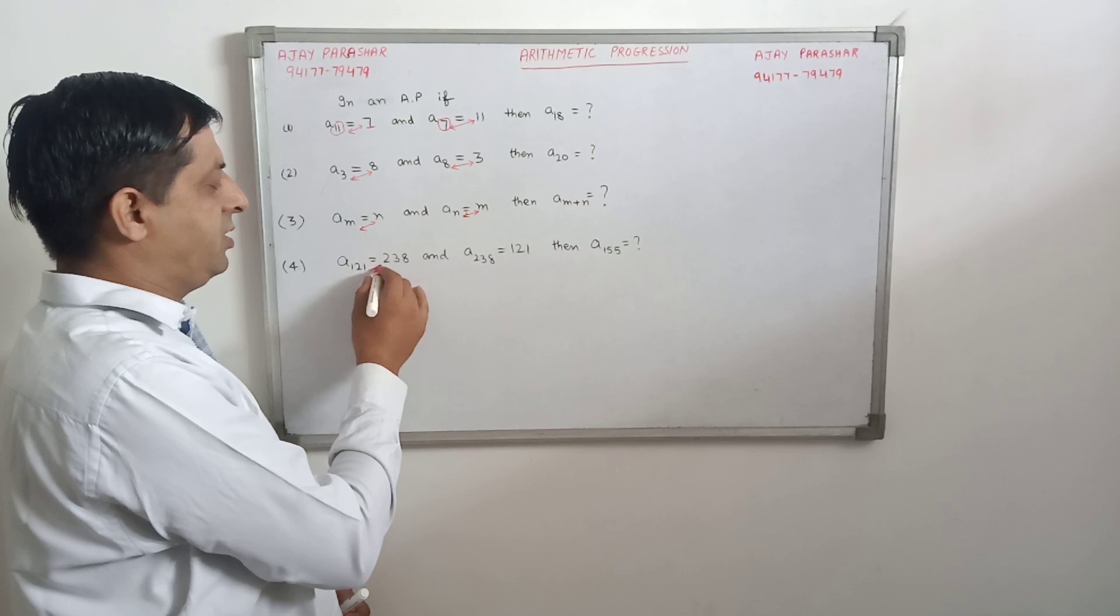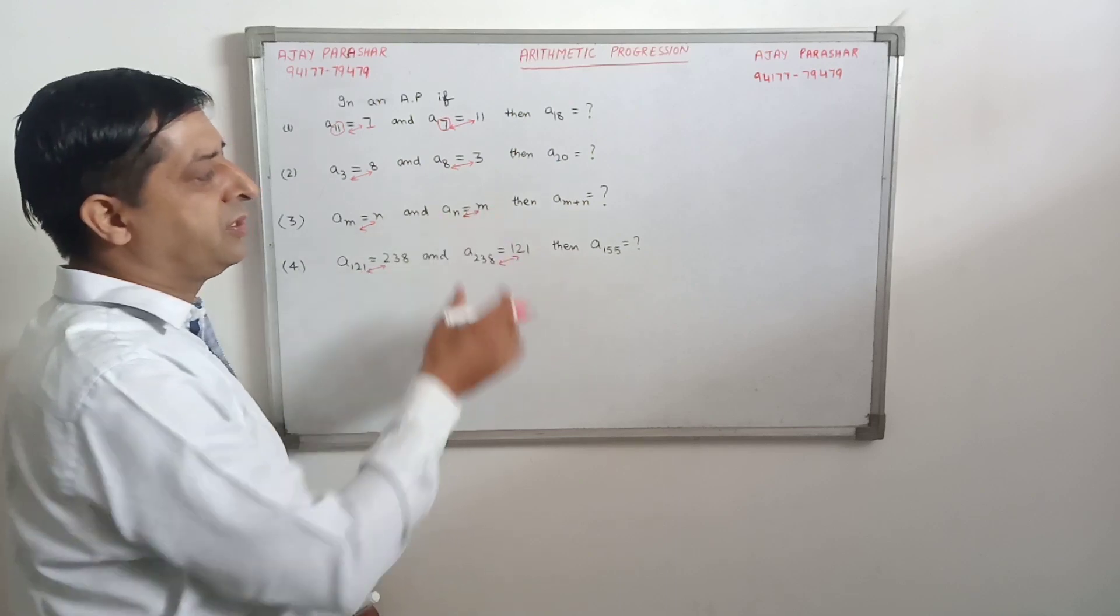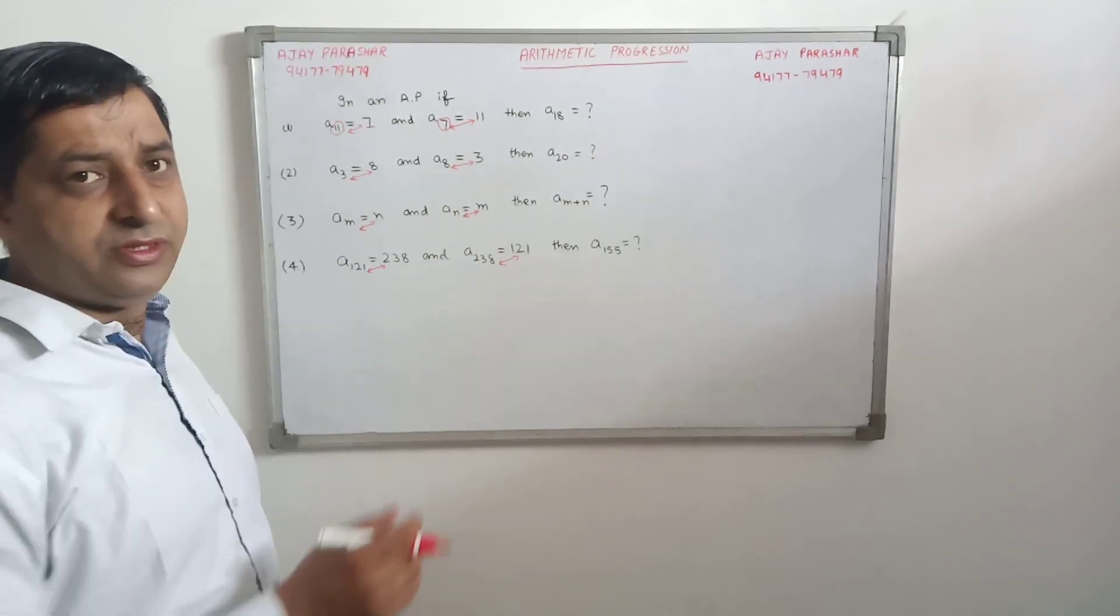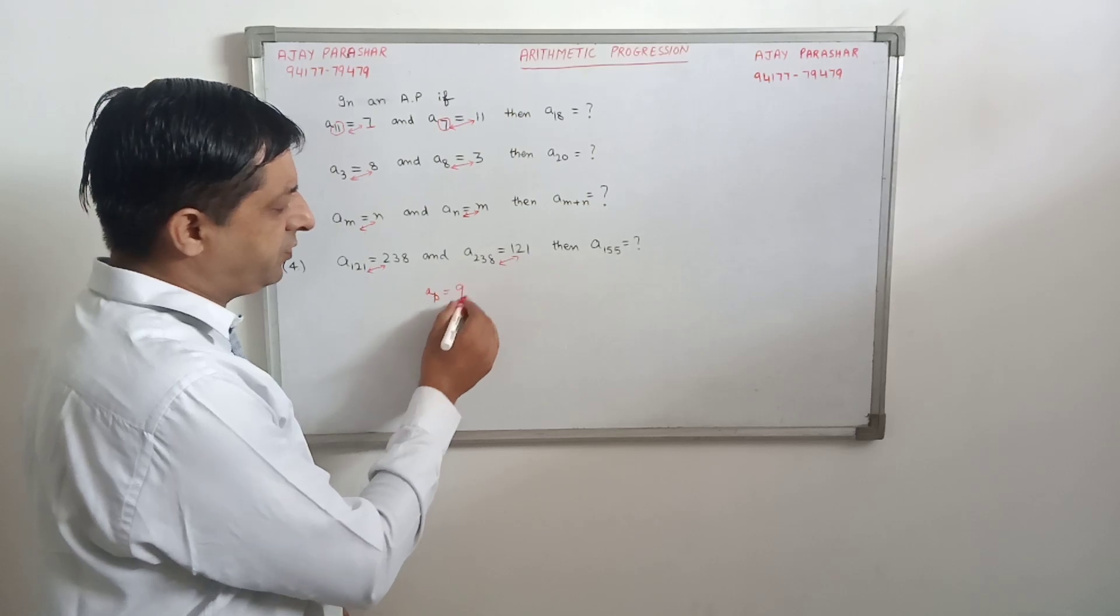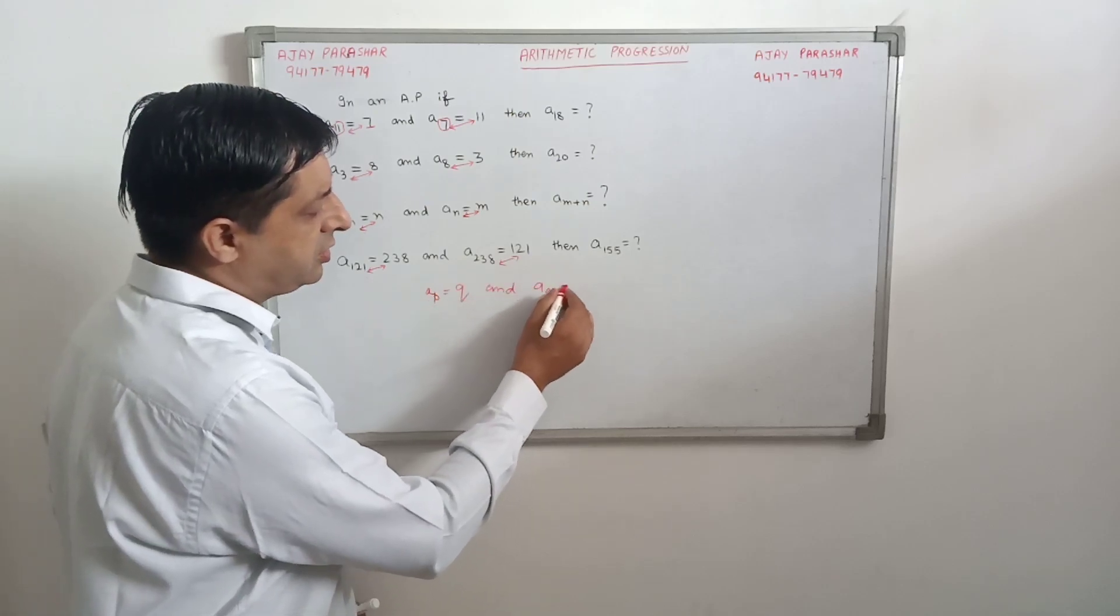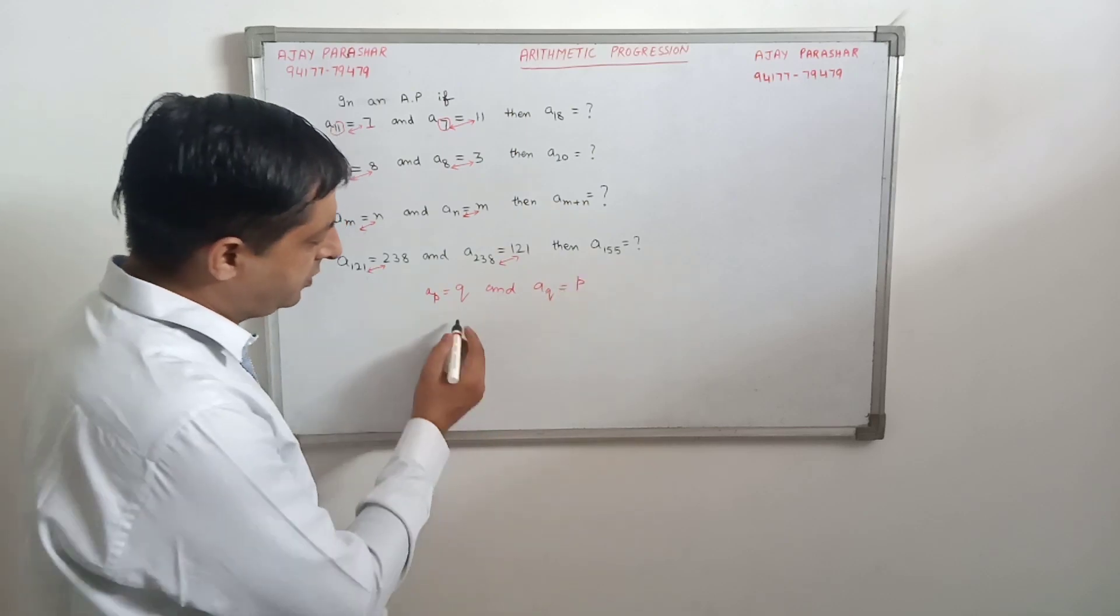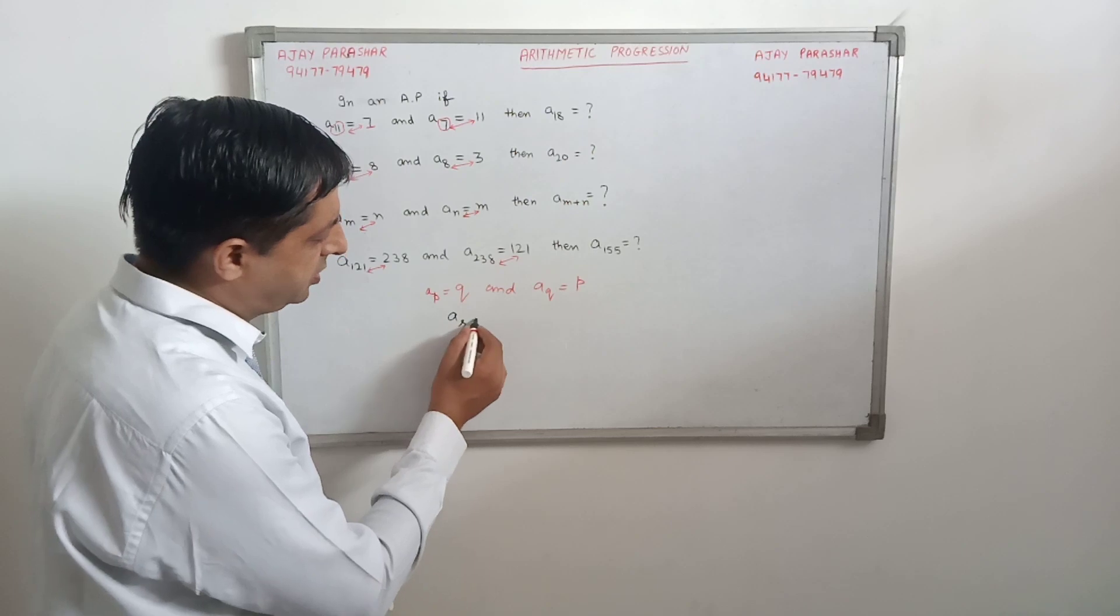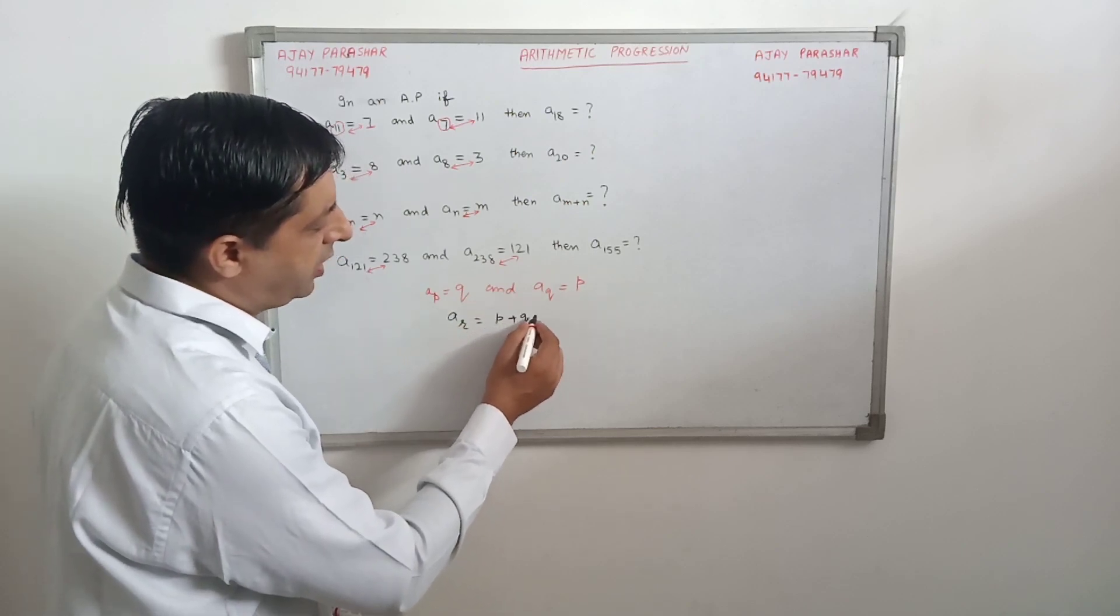And same way, 121, 238, 238, 121. In such questions, the trick is that if pth term is q and qth term is p, then rth term is always p plus q minus r.